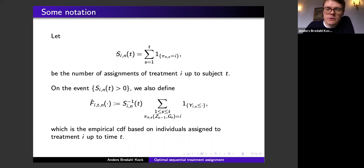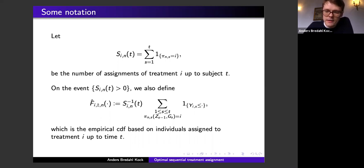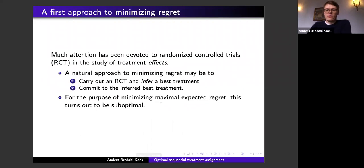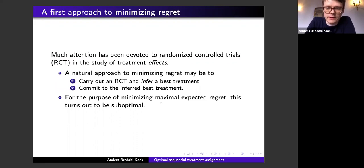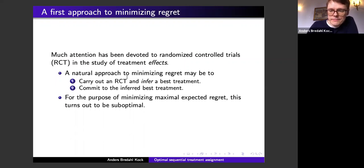Some notation before the bounds: S_{i,t} denotes the number of times treatment i has been assigned in the course of the first t assignments. By F̂_{i,t,n} we denote the empirical CDF based on individuals assigned to treatment i in the course of the first t assignments.